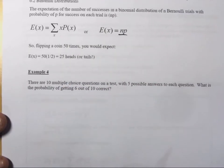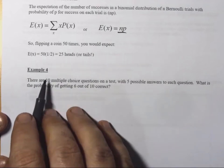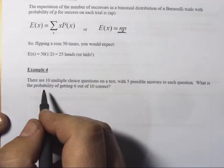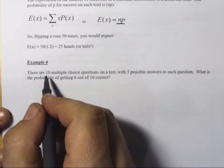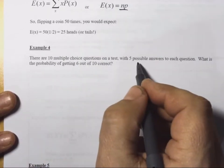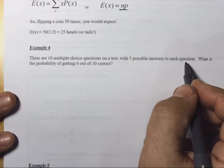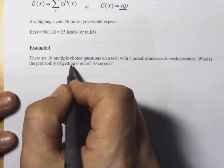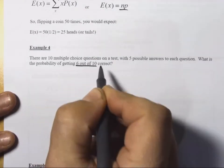Okay, let's see how we can use that in example 4 and example 5. In example 4, it says, There are 10 multiple choice questions on a test with 5 possible answers to each question. What is the probability of getting 6 out of 10 correct?